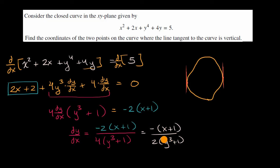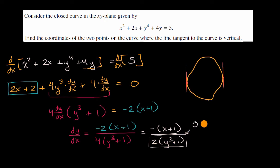Why is this useful? We can think about what y values would make the denominator equal zero — y is the only variable in the denominator — and then find the corresponding x values by going back to the original equation. The denominator is zero when y is equal to negative one. So when y equals negative one, let's figure out what x is by substituting back into the original equation.